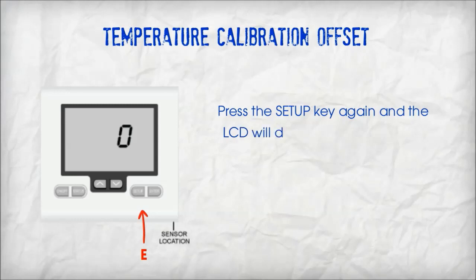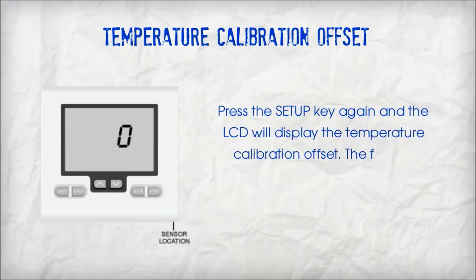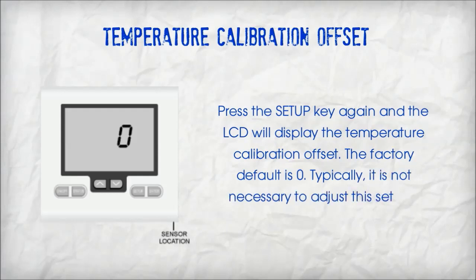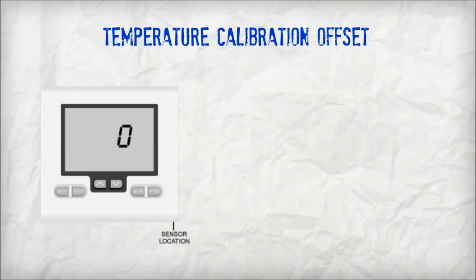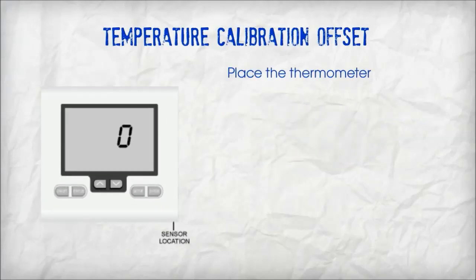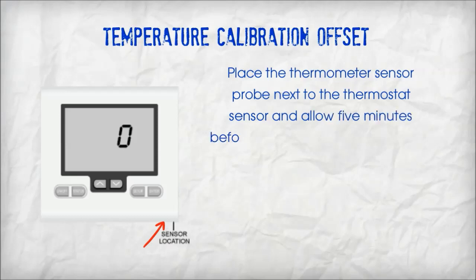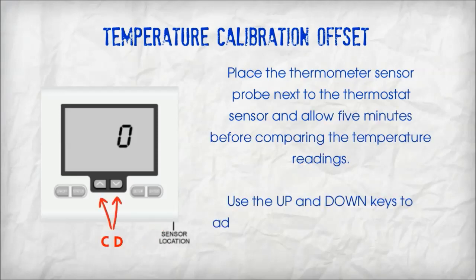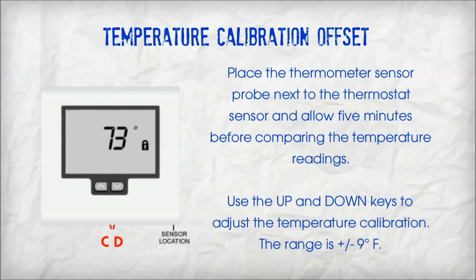Press the setup key again and the LCD will display the temperature calibration offset. The factory default is 0. Typically it is not necessary to adjust this setting. If calibration is necessary, a high quality electronic digital thermometer must be used. Place the thermometer sensor probe next to the thermostat sensor and allow 5 minutes before comparing the temperature readings. Use the up and down keys to adjust the temperature calibration. The range is plus to minus 9 degrees Fahrenheit.